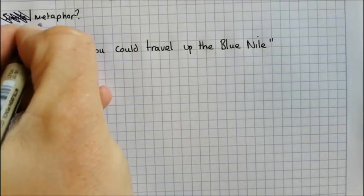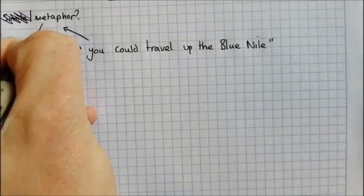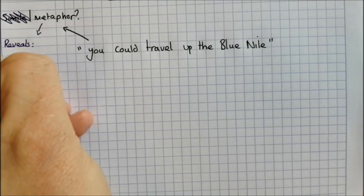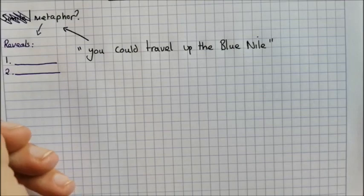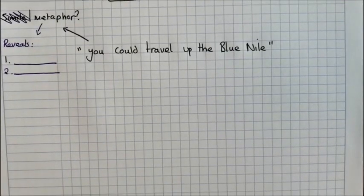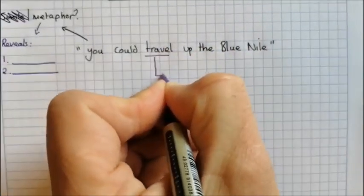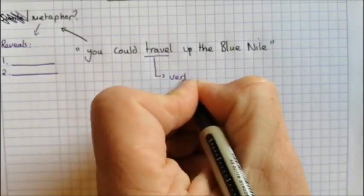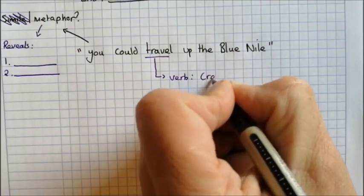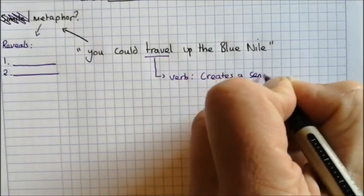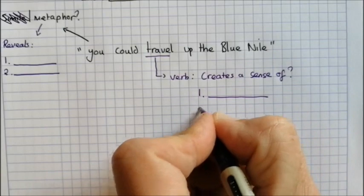Once you've decided you know the right answer, which is that it is a metaphor, what I want you to think is what does that metaphor show about her classroom? That metaphor reveals what Sue thinks about Mrs. Tilcher's classroom if you almost feel like you could travel up the Blue Nile there. Then I want to focus on two more bits. This verb here 'to travel' reveals that Mrs. Tilcher's classroom gave the kids a sense of what? Give me two things that it gives us a sense of.